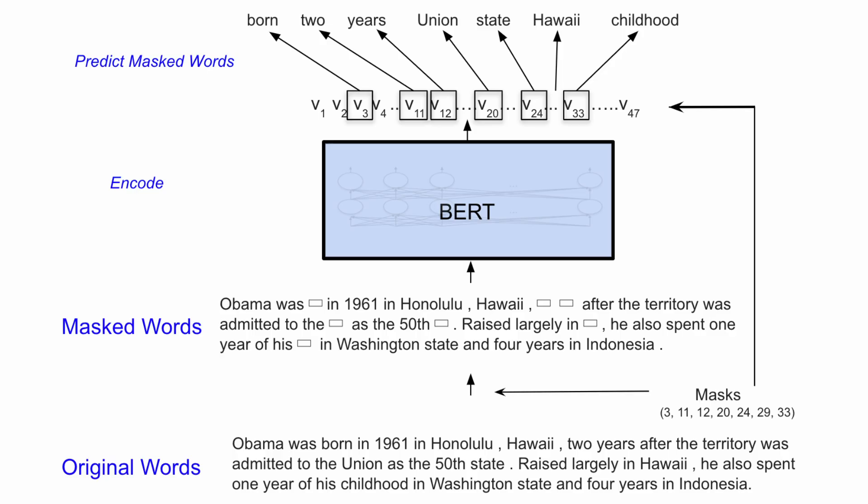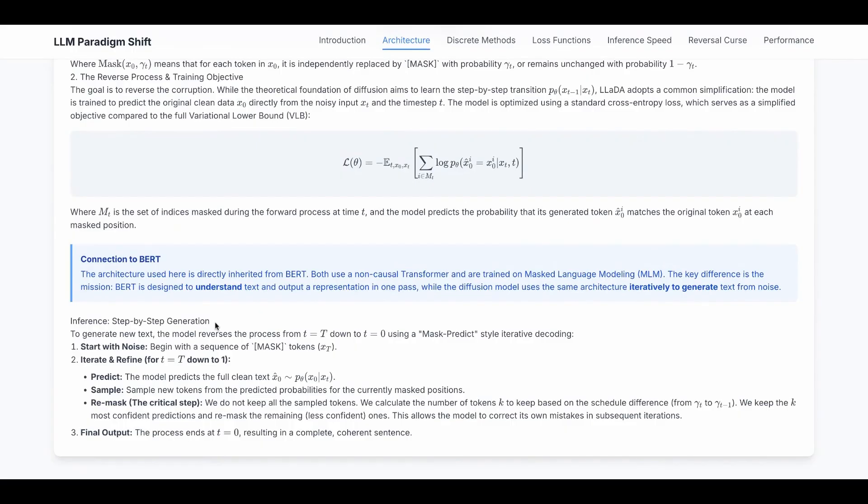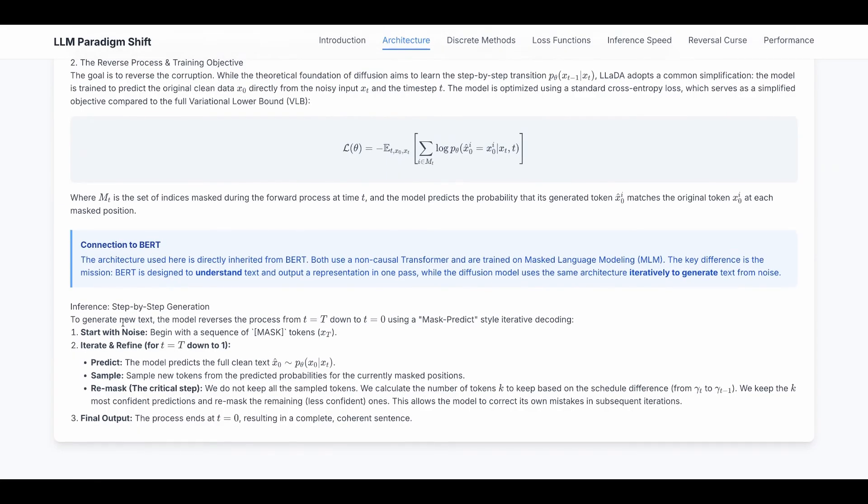For example, we have a text paragraph and we have a model that predicts the mask position. So we mask all the words and then we put it through BERT. So BERT can predict what is the token in the mask position, and then we compare it with the original mask words to calculate the loss function.